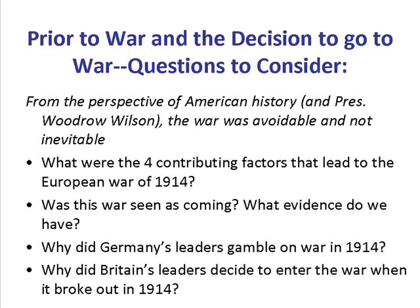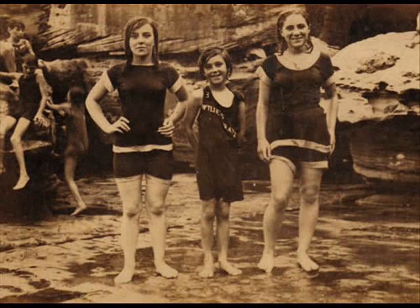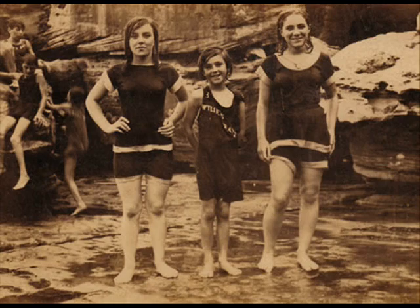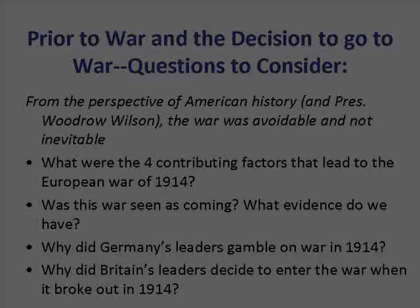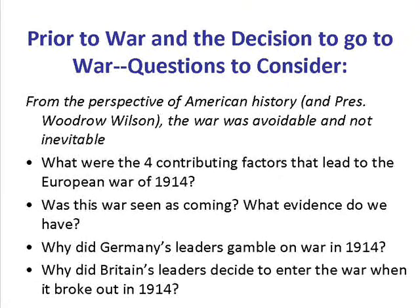1. Militarism. 2. Imperialism. 3. Secret diplomacy — which would include alliances, political pacts, family intrigue and rivalries influencing political decision making. 4. An arms race. Was this war seen as coming? What evidence do we have?